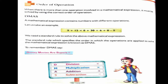So D stands for division. M stands for multiplication. A stands for addition and last S stands for subtraction. So first you have to divide, then multiply, then add and last you have to subtract. So this is the standard rule.